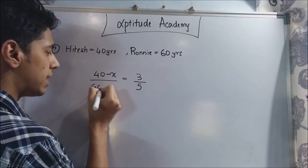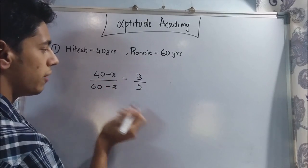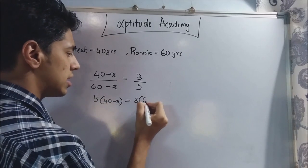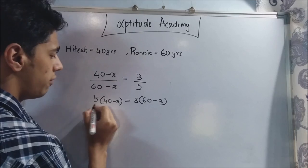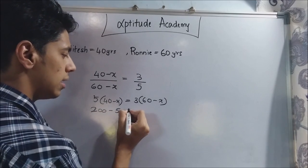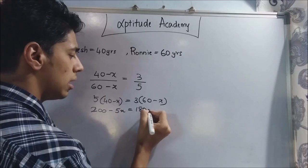And now this fellow will be 60 minus x. Now if you cross multiply it will be 5 into 40 minus x is equal to 3 into 60 minus x. 5 into 40 is 200 minus 5x is equal to 3 into 60 is 180 minus 3x.